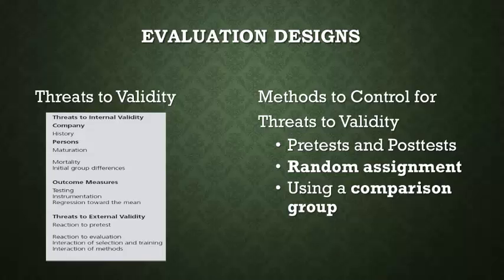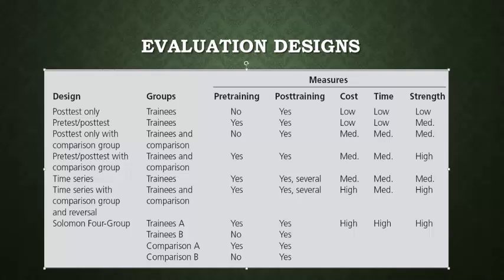Fortunately, we do have options available to control for the threats to validity. We can use pre-tests and post-tests to show differences and demonstrate that training is occurring. We can have random assignment, meaning we only analyze a random number of assignments to make it less likely that anything doesn't align properly. We can also use a comparison group to compare the effects of the training program. These are time-tested designs that are effective at determining whether or not training is occurring.